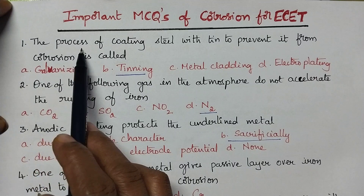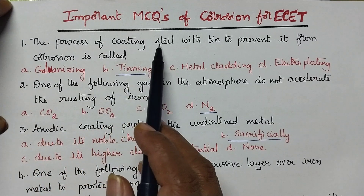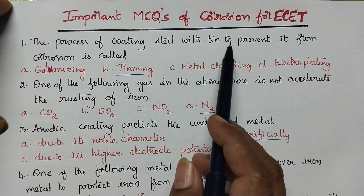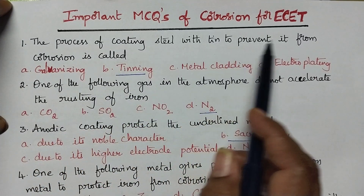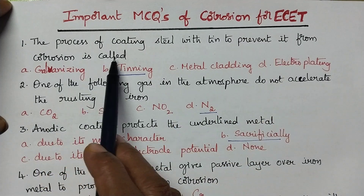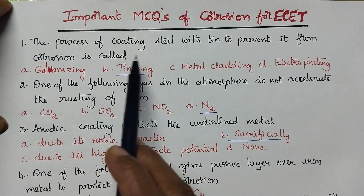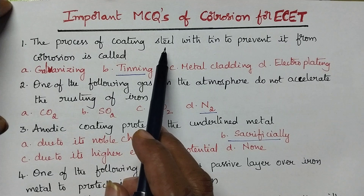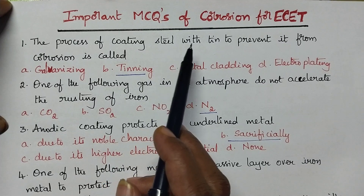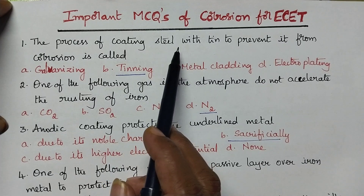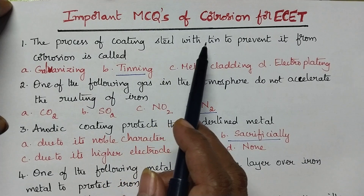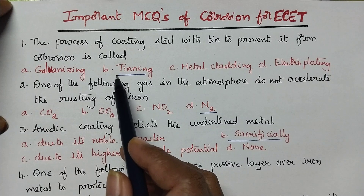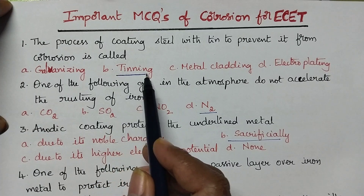The process of coating steel with tin to prevent it from corrosion is called tinning. Generally, iron or steel metals will be protected from corrosion by coating with tin, and the process is called tinning.